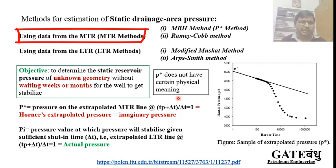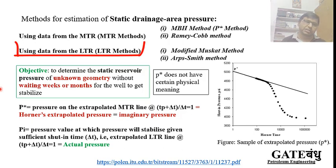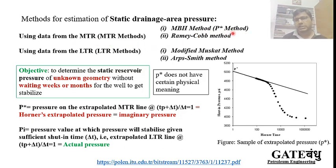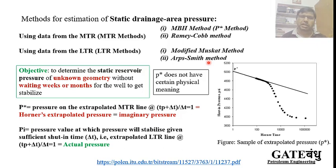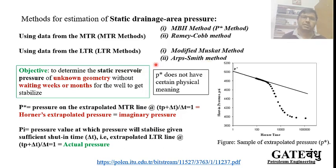Using the middle time region, we apply the MBH method (a kind of p-star method) and second is the Ramey and Cobb method, which also uses middle time region data. Using data from the late time region, we apply the modified Muskat method and the R-Smith method. In this lecture we will talk about the MBH method and the modified Muskat method. I will leave you to refer to any book for the Ramey-Cobb method and R-Smith method.